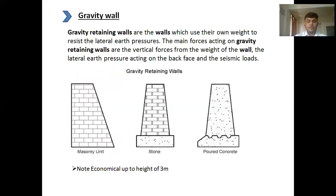Talking about the gravity wall cross-section: gravity walls are walls which use their own weight to resist the lateral pressure. The main forces acting on a gravity wall are the vertical forces — the weight of the wall — and the lateral pressure acting on the back face of the wall.